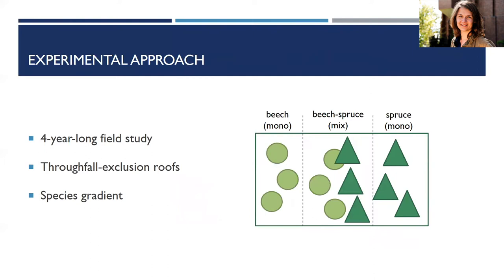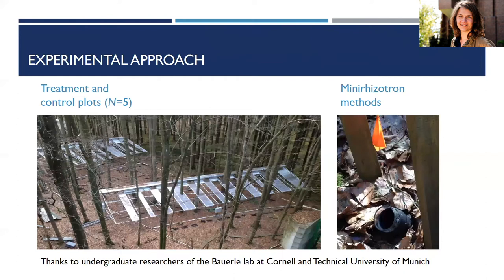I tested these hypotheses through a four-year long field study at a site with ten research plots arranged along a species gradient — a mixed zone of beech and spruce in the middle, with monocultures of beech or spruce on the sides. Half of these plots had throughfall exclusion roofs installed on top. The roofs closed when it was raining but were left open during winter months, so we were really studying the effect of summer drought during the growing season, while still allowing some soil moisture recharge.